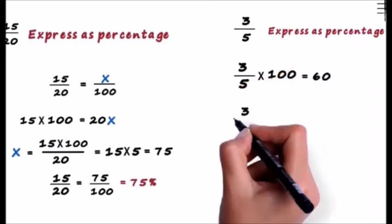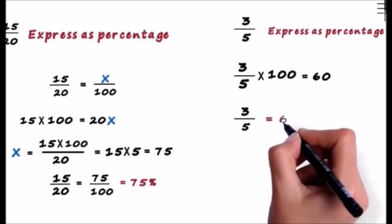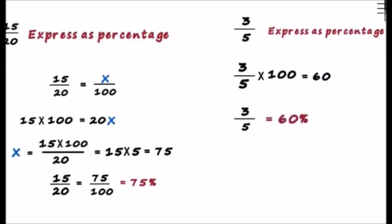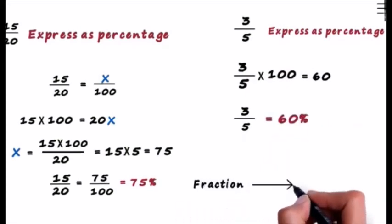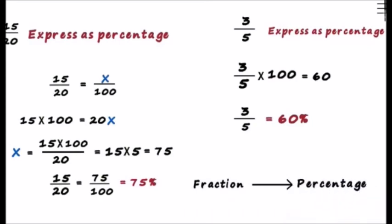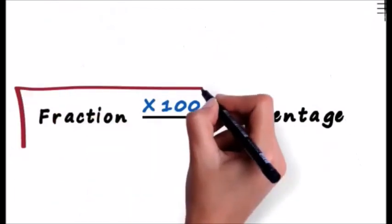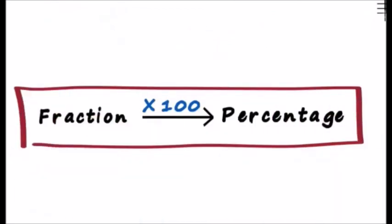3 by 5 is equal to 60%. Remember students, to convert a fraction into percentage, just multiply the fraction by 100. This formula will help you to solve problems really quick.